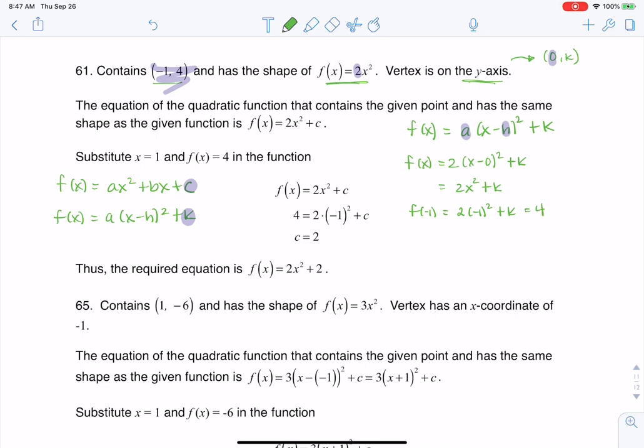So that gives me an equation. So (-1)² is 1, 2 times 1 is 2, so 2 + k = 4. And if I solve that, I get k = 2.